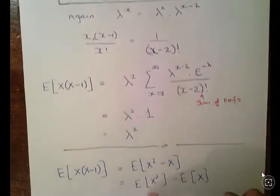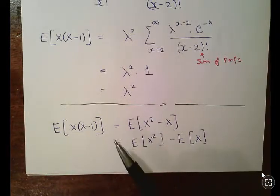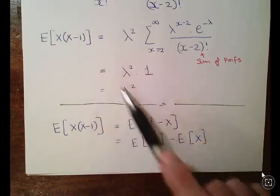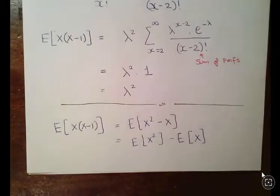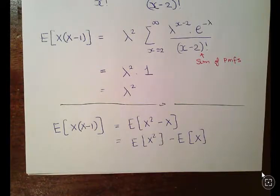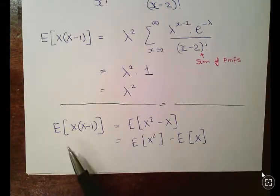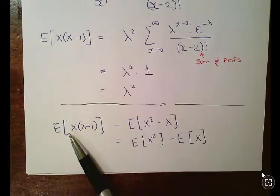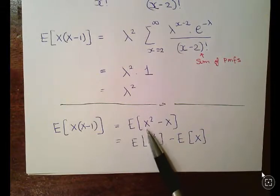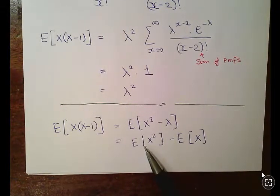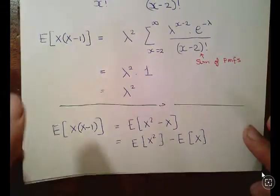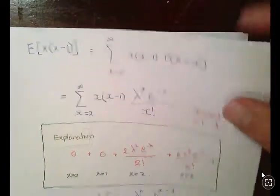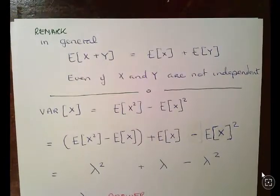So, what we're going to do now is calculate the expected value of X squared. We found that the expected value of X times X minus 1 to be lambda squared in the last video. Now what we are going to do is tackle the big one, the variance of X. So what I'm going to do here is just slightly re-express this here. The expected value of X times X minus 1 is the expected value of X squared minus X, which can be written as the expected value of X squared minus the expected value of X. That is getting very close to what we need for the variance.